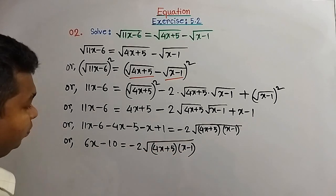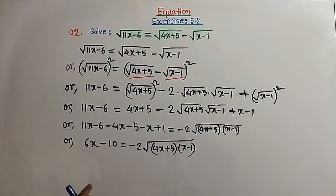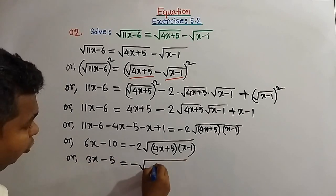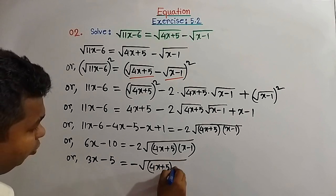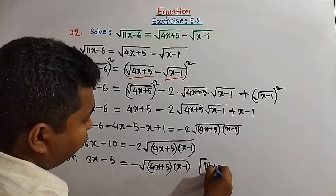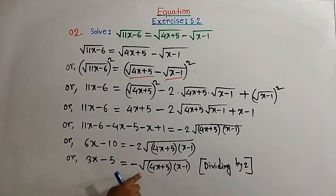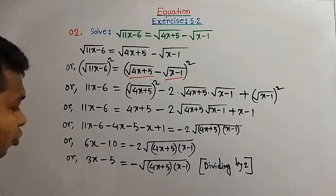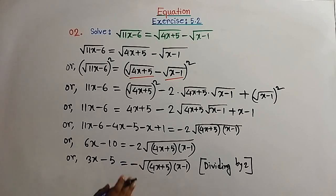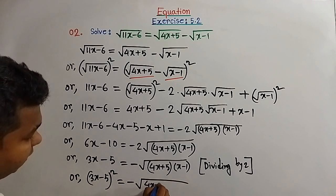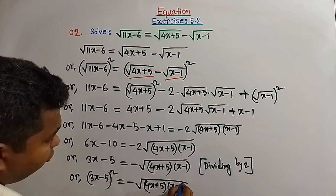All terms are even, so dividing by 2 we get: 3x minus 5 equal to minus square root of (4x plus 5)(x minus 1). There is still a radical sign, so we square on both sides one more time. Squaring: (3x minus 5) whole square equal to square root of (4x plus 5)(x minus 1), whole square.